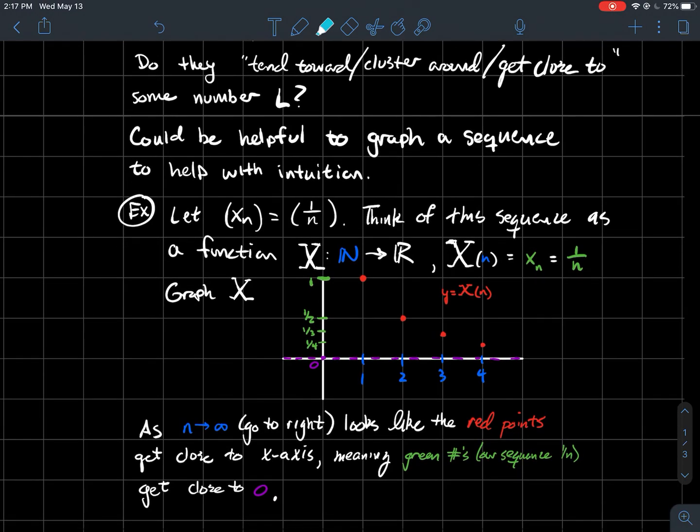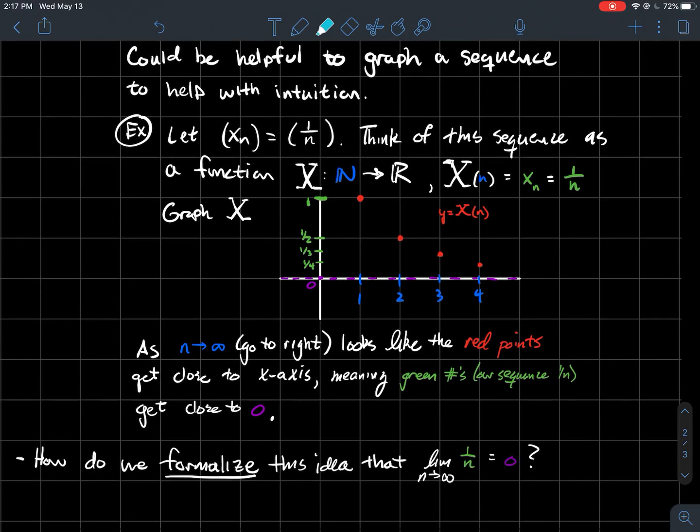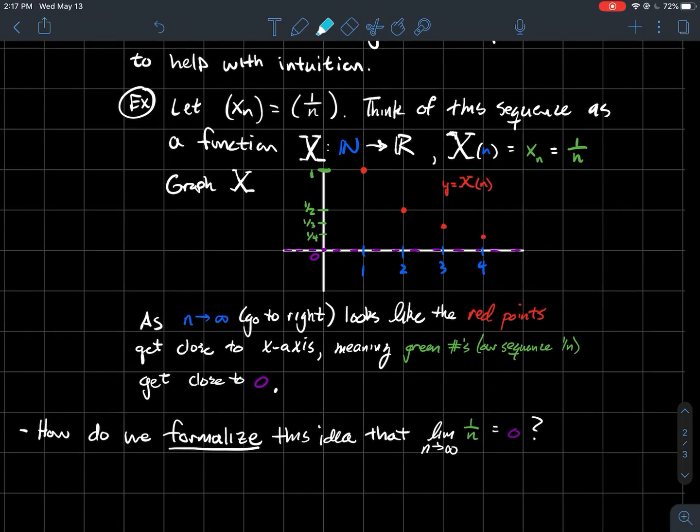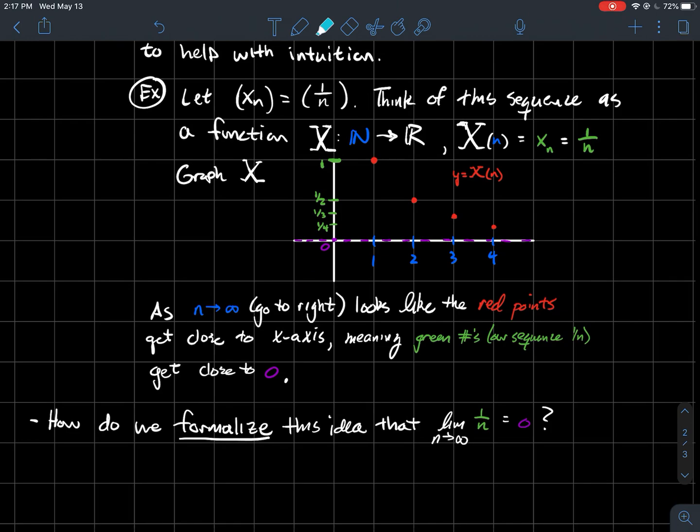And maybe what we see here is that as I go farther to the right, it looks like the red points, or equivalently the green y values, they're getting lower and lower, closer and closer to zero, which I've highlighted there in purple. But we need to try to make this stuff precise. So how do we formalize this idea that the limit of one over n, as n goes to infinity, should equal zero?